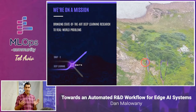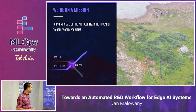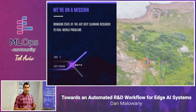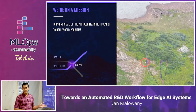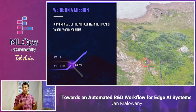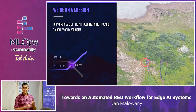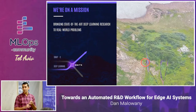We are oriented into deep learning computer vision for SWAP-C systems. SWAP-C, if people are not familiar with the term, stands for size, weight, power, and communication. That means the platforms we work on are small and have a small power consumption.